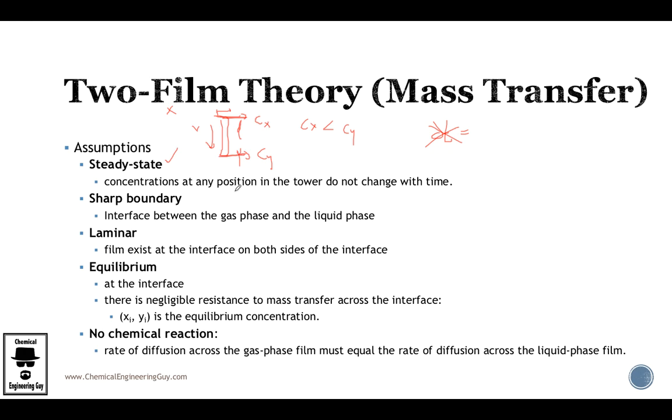We are also going to assume sharp boundary conditions, meaning that the interface between the gas phase and the liquid phase are sharp, meaning that you can actually differ them very easily, which in real life is kind of hard to see. It's like a bubble. It's kind of hard to see where the gas bubble is. But what we are going to assume is that it's just an area of contact.